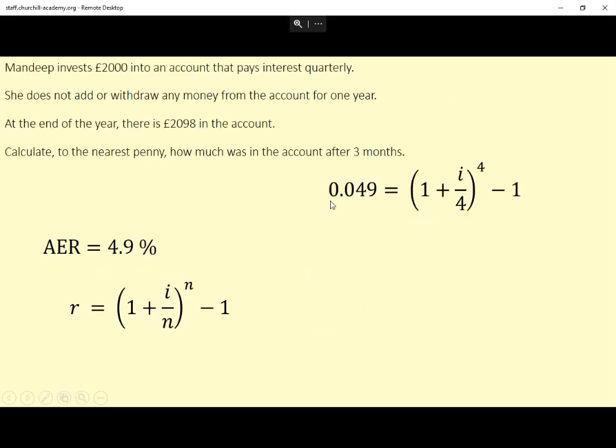So substituted in some bits. AER 0.049, remember it has to be written as a decimal, so 4.9 divided by 100, 0.049. I've replaced the n's with 4 because the compounding period was quarterly, that means it happens four times a year. So I just have to solve this equation to work out what i is.